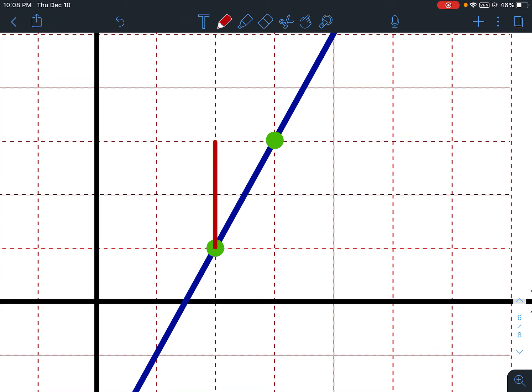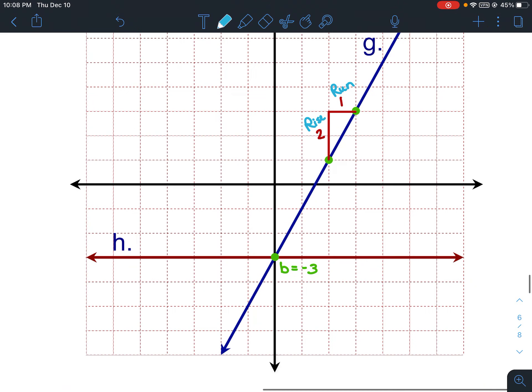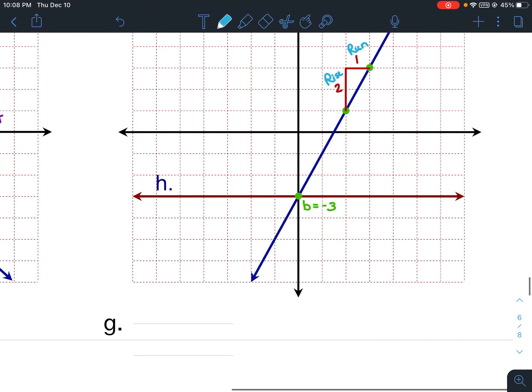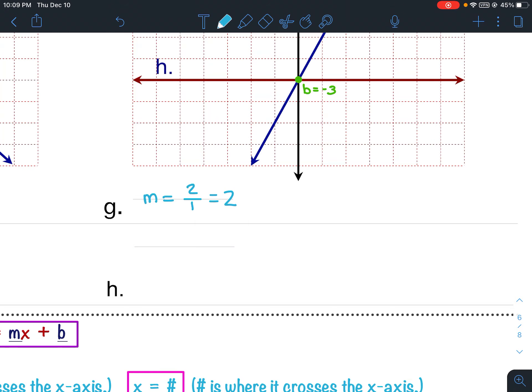So, let's use these two points here to find our rise and run. So, this would be our rise. And it's going up 1, 2, and this would be our run. And it's going over 1. So, for the notes, I want you to put rise and run. So, for g, my slope, my rise is 2, my run is 1. That would simplify to just 2. My y-intercept, which is down here, is negative 3. So, b equals negative 3.